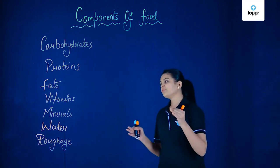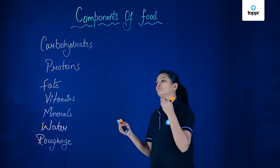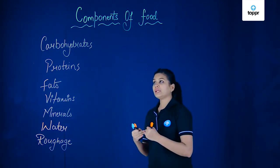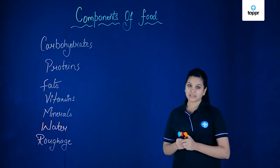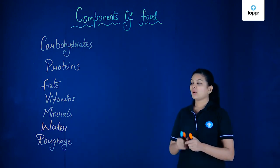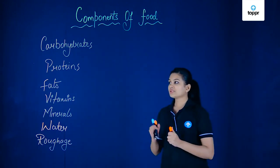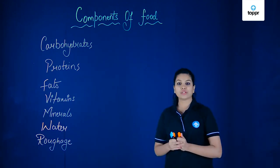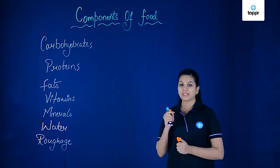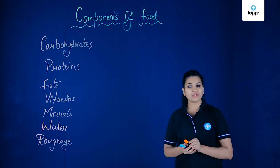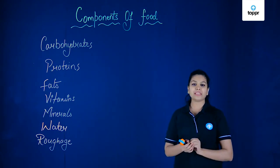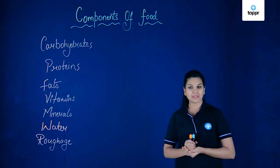So these are the nutrients which we should take to have a balanced diet. Now, what are the sources of these nutrients? What are their main functions and their types? We are going to have a look in the upcoming lessons.